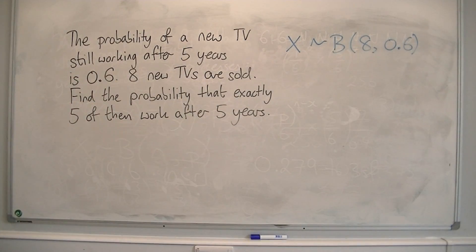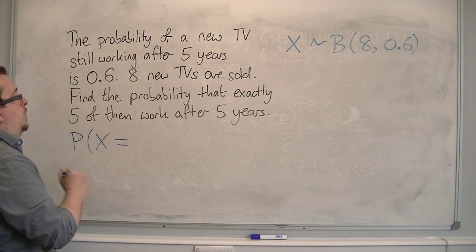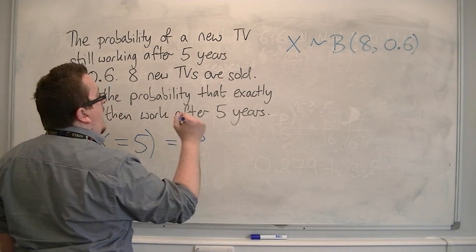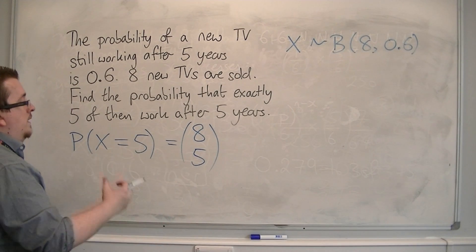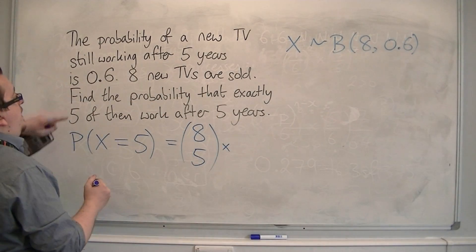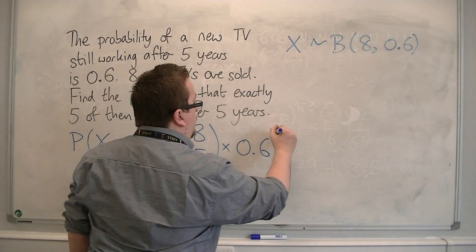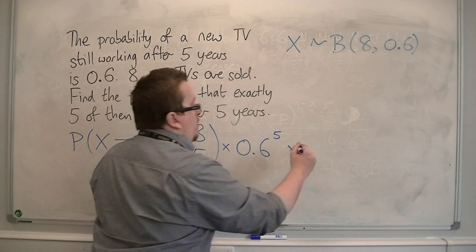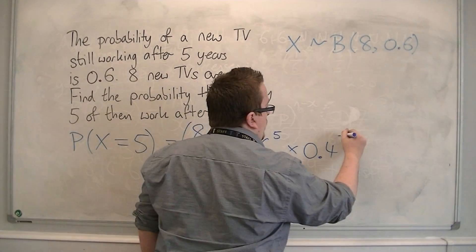So if I'm working with this, then the probability that X is equal to five — the probability that exactly five of them are working after five years — is 8 NCR 5, so the number of different ways I can get five working TVs out of eight, times the probability of the TV working, 0.6, to the power of how many I want to be working, so five, times by one minus p, so one minus 0.6, the probability that they will not be working, to the power of how many would not be working, so three.